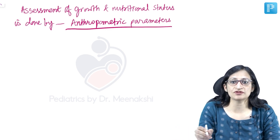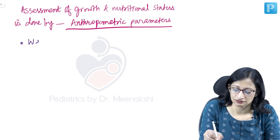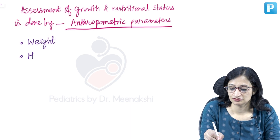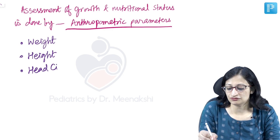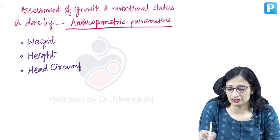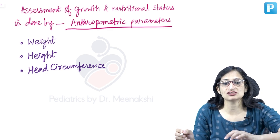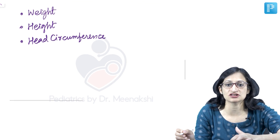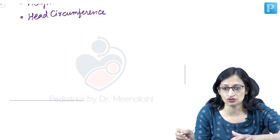The most important anthropometric parameters are the weight, the height, and the head circumference, which we will be discussing in detail. Apart from this, there are some other anthropometric parameters which are used more for the assessment of nutritional status, but also give an idea about growth.